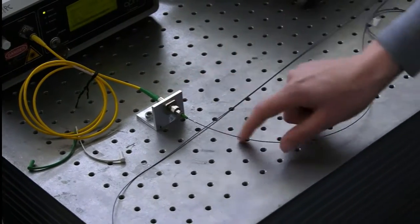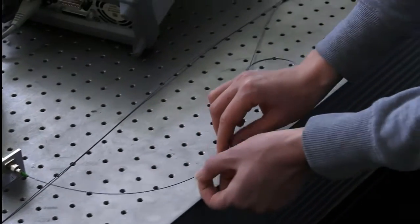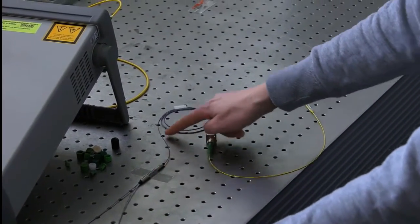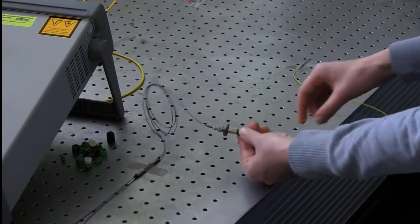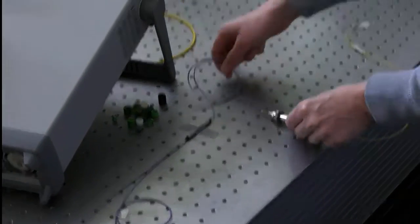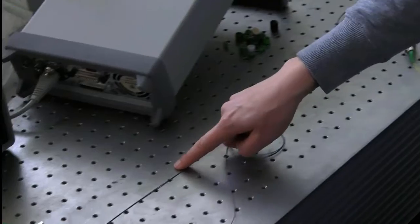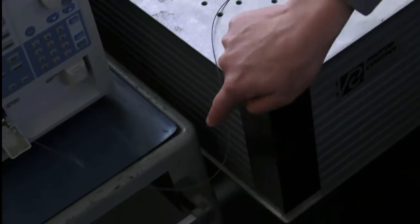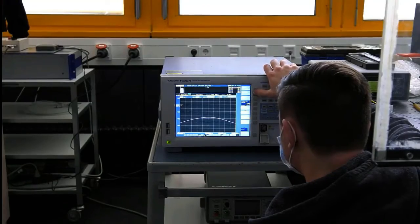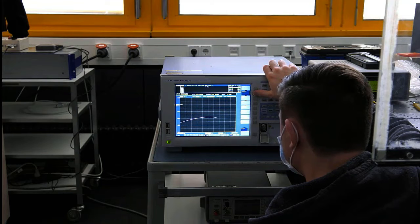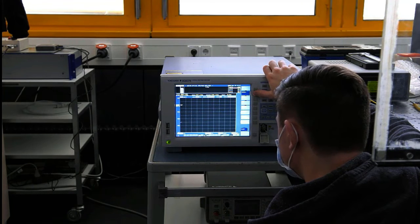To determine the reflectivity of the FBG and monitor the inscription process, we use a setup consisting of an Erbium-doped fiber amplifier as a broadband light source connected to a fiber-coupled circulator that guides the light to the photosensitive fiber. The back-reflected light from the FBG passes the circulator again and is detected by an optical spectrum analyzer, OSA for short. If no grating is inscribed, we will only get a back reflection of the characteristic light source spectrum from the perpendicular fiber end face.